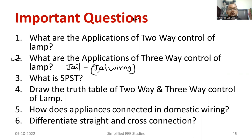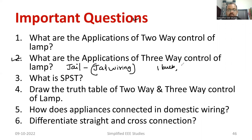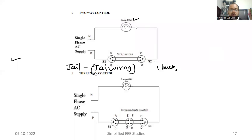Jail is made up of different cells — cell number one, cell number two, cell number three, etc. There is a long corridor, and one bulb is going to be controlled from different positions, especially three positions. This type of wiring is known as three-way control of lamp. For clarity, let me show you the circuit of three-way control of lamp.